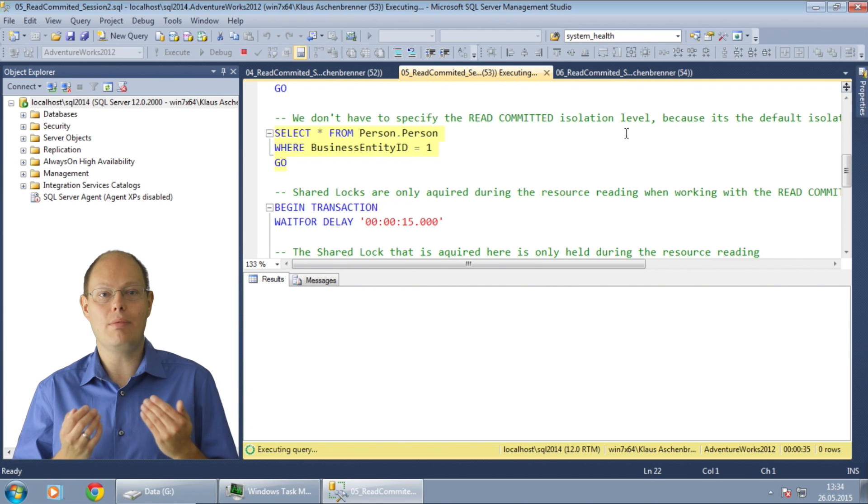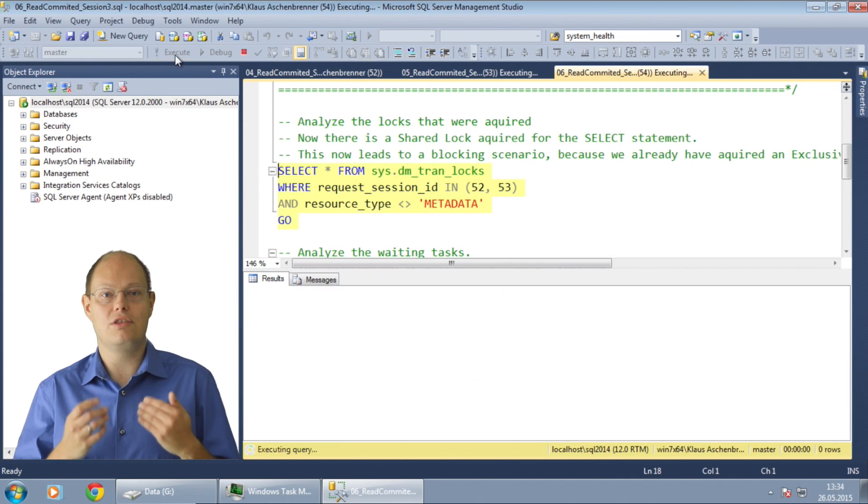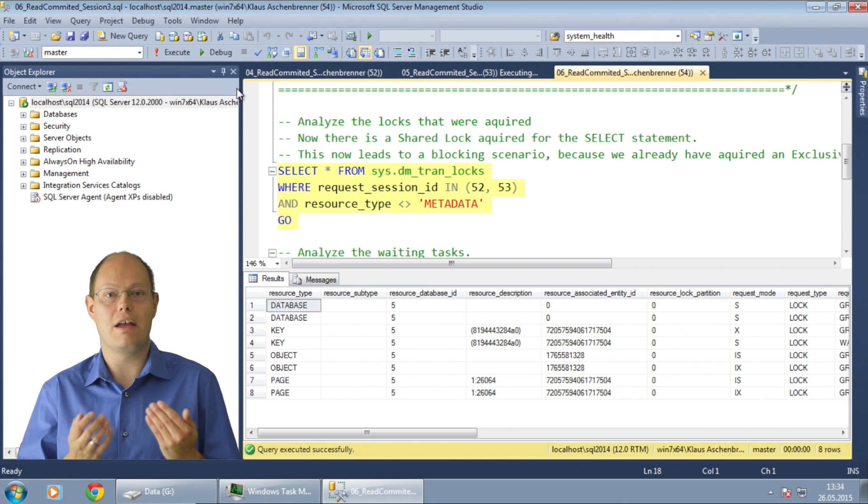You can now troubleshoot that blocking situation very easily with some dynamic management views in SQL Server. You can look for example into the lock manager by using the DMV sys.dm_tran_locks. Every record that is returned from this DMV is one lock that is currently stored in the hash table of the lock manager.